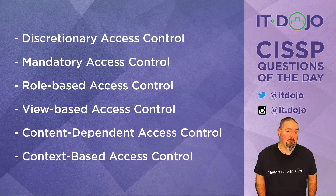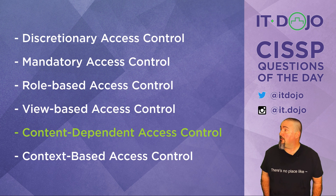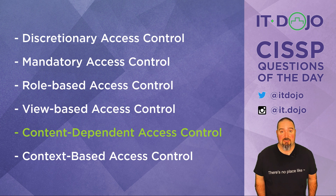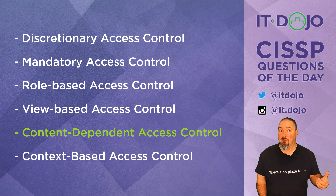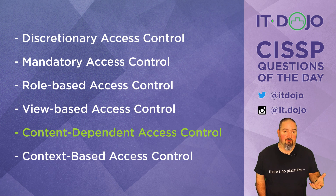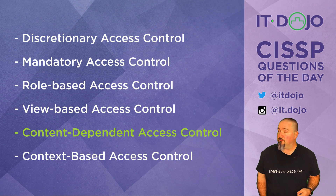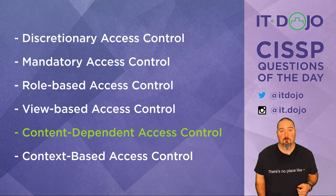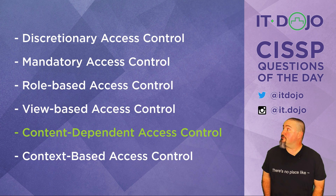That leaves us with content-based access control, which is absolutely the answer we are looking for. Content-based access control can dynamically change your ability to access a particular resource based upon what it contains — so in the case of a database, what type of data is in the record or in the particular field. It is however resource-intensive because it requires a lot of additional logic in order to make those kinds of decisions.